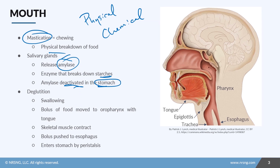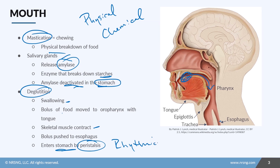There's another process called deglutition, which is the process of swallowing. As we chew food, we have to move it from the mouth into the oropharynx to get it to the esophagus. Skeletal muscle contraction rolls the bolus of food from the oropharynx with the tongue and pushes it to the esophagus. It then enters the stomach by peristalsis, which is a rhythmic contraction of smooth muscle that propels food down the GI tract.